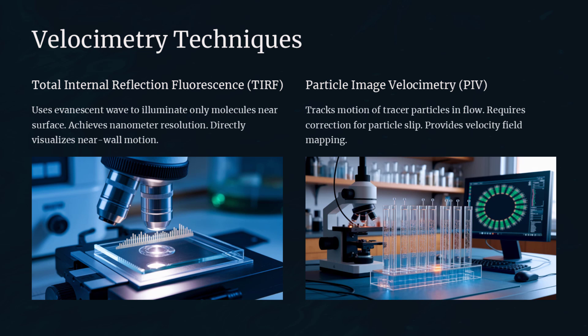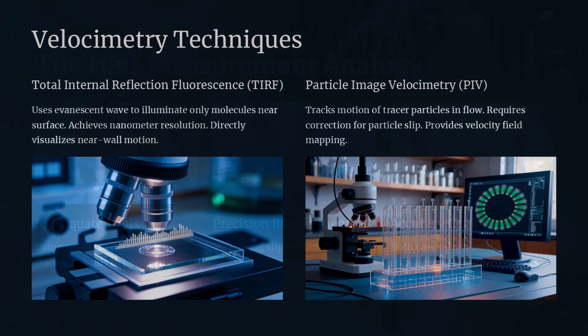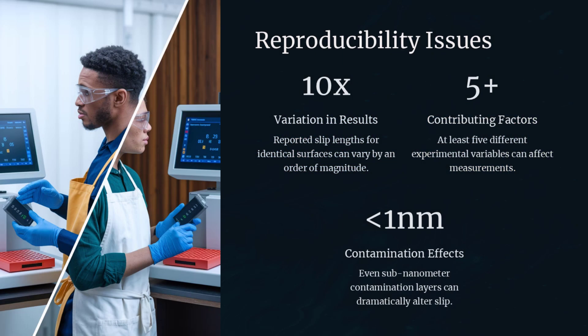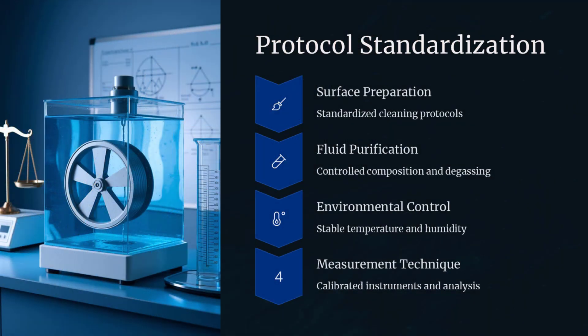Measuring slip lengths demands high-precision velocimetry techniques such as total internal reflection fluorescence or particle image velocimetry (PIV) with nanometer resolution. Experimental artifacts like tracer particle slip, surface contamination, or thermal gradients can mimic or mask true slip. Reproducing slip measurements across different labs has proven difficult, highlighting the sensitivity to experimental conditions. Rigorous protocols and cross-validation are required to establish reliable slip data. Discrepancies in reported slip lengths on the same polymer coating have varied by an order of magnitude between research groups — like measuring the thickness of a hair with a ruler, where slight misalignments yield vastly different measurements.